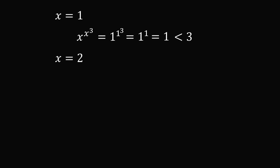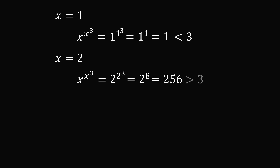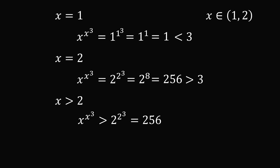What happens when x is equal to 2? x to the power of x cubed will be 2 to the power of 2 cubed. 2 cubed gets evaluated first — this is equal to 8. 2 to the power of 8 is equal to 256, which is much larger than 3. For any value of x greater than 2, x to the power of x cubed is just going to keep increasing, so none of these will equal 3. Therefore, the value of x we're looking for is between 1 and 2.